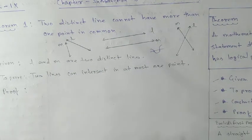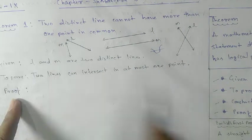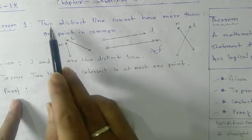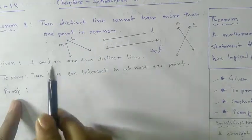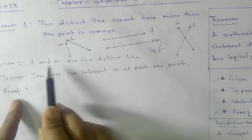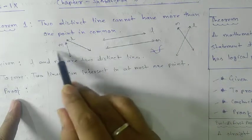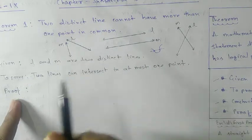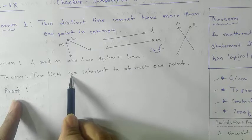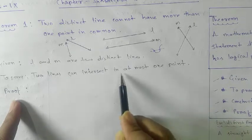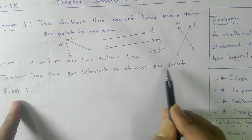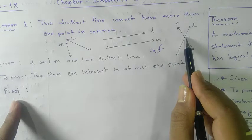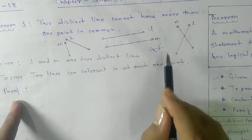Now we will see the proof. As already stated, you need four steps. First, the Given: two distinct lines L and M are given. We need to prove that two distinct lines can intersect in at most one common point — that means a maximum of one. Either zero or one, not more than one.